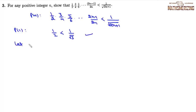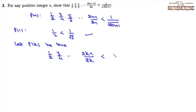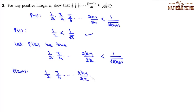We assume P(k) is true: (1/2)(3/4)···((2k−1)/(2k)) < 1/√(2k+1). We need to prove P(k+1). For P(k+1), we multiply both sides by (2k+1)/(2k+2), giving a bound of (1/√(2k+1)) · (2k+1)/(2k+2) = √(2k+1)/(2k+2).